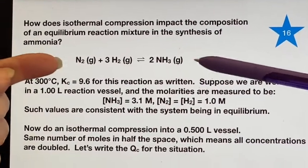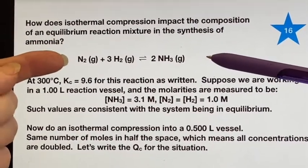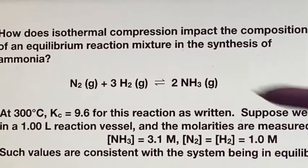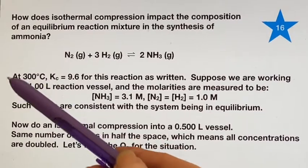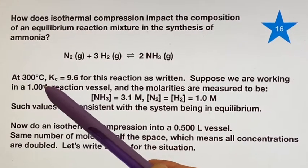You can see we have the equation here: nitrogen, hydrogen, ammonia. All of them are gases, and we said this was going to be isothermal, so we're going to stay at 300 degrees Celsius.